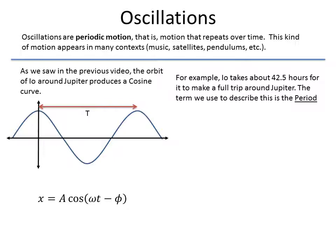As I said, Io has a period of about 1.7 days, which is about 42 and a half hours, to make a full trip around. So if it starts all the way to the right, goes all the way to the left, and then back all the way to the right, it completed a full rotation. We call this term, when we're talking about oscillations, the period. So the period of oscillation for Io is 42 and a half hours.